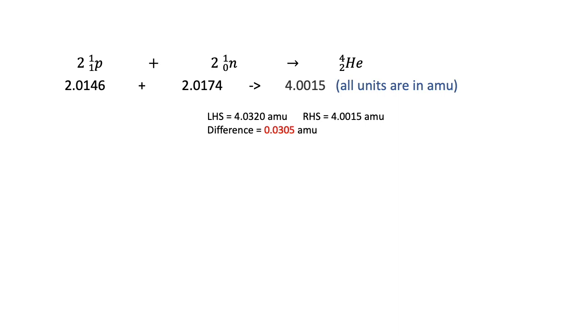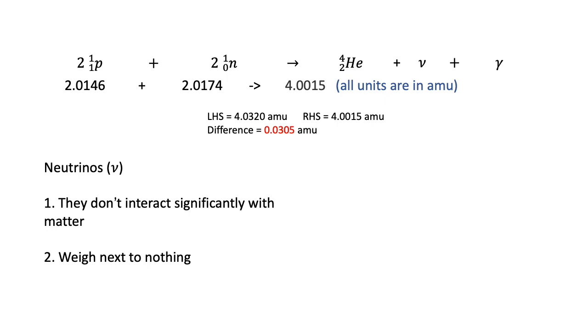Well, let's add another two factors on the right-hand side of this equation. We now have two protons plus two neutrons, giving us alpha particles plus neutrinos plus gamma rays. This is a more accurate description of the nuclear reaction. Neutrinos are very interesting in their own way because they don't interact significantly with matter. They also weigh next to nothing, so we can ignore them in this video.